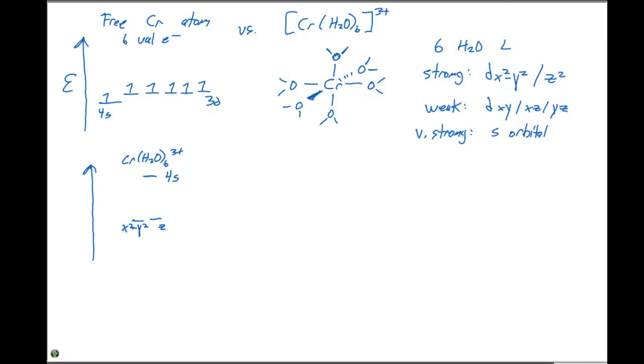The next strongest interaction is going to be the dx² - y² and the dz². These orbitals right here are called degenerate orbitals. And degenerate means they have the same energy. The weakest interaction, or the lowest energy orbitals, are going to be the dxy, the dxz, and the dyz orbitals. These are also degenerate.